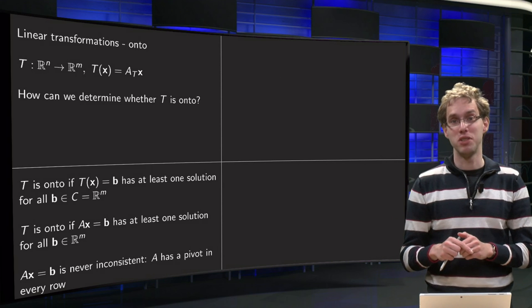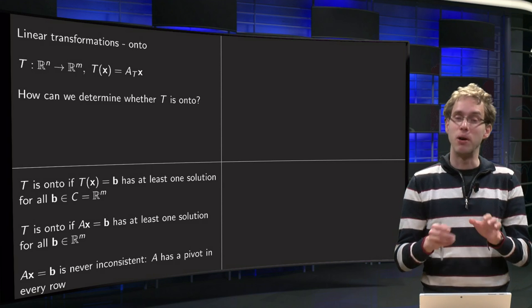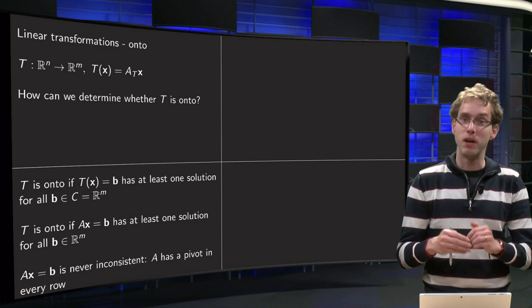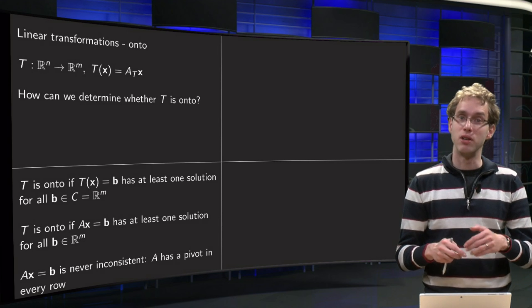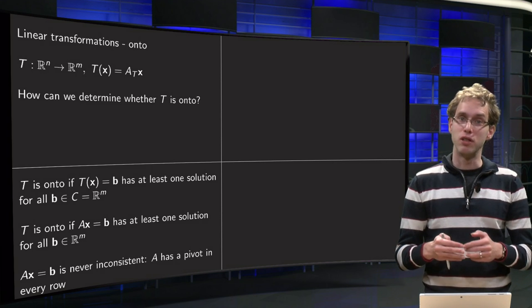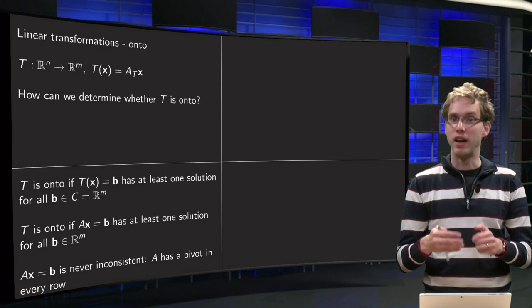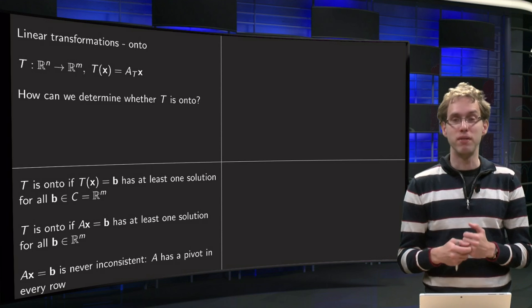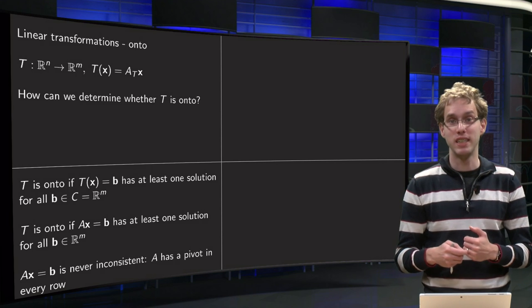So in that case you will not be able to solve Ax equals b for any b, so it goes both ways. So the transformation is onto if you can solve Ax equals b for any b, and it means you need a pivot in every row of your matrix A.